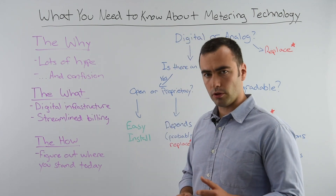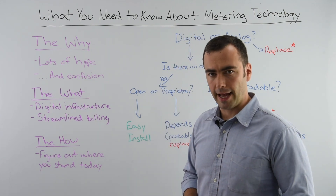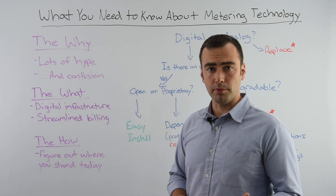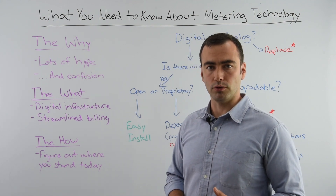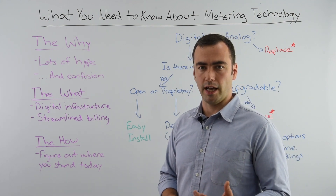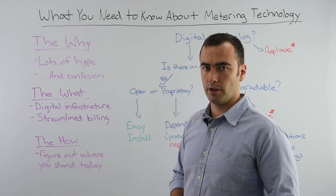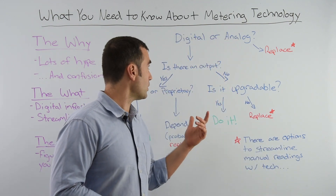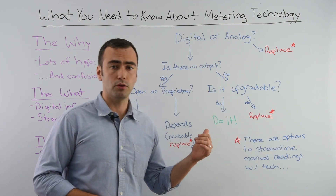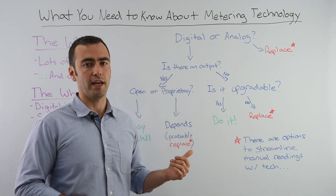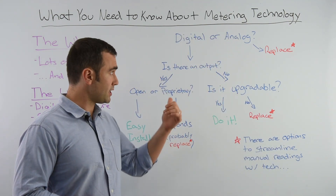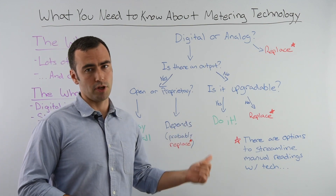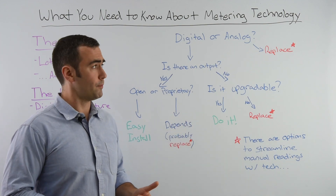So let's talk about the how. The first step is to figure out what you currently have in place. I've made a quick flowchart to help you understand the best path to that digital metering infrastructure.